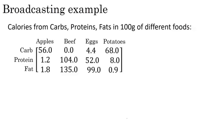Let's motivate broadcasting with an example. In this matrix, I've shown the number of calories from carbohydrates, proteins, and fats in 100 grams of four different foods. For example, 100 grams of apples has 56 calories from carbs and much less from proteins and fats, whereas 100 grams of beef has 104 calories from protein and 135 calories from fat.